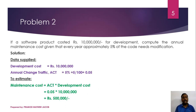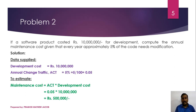The development cost is given as one crore. Annual Change Traffic ACT equals 5%, which is 5 divided by 100, equal to 0.05. Maintenance cost equals ACT into development cost, that is 0.05 into one crore, which equals five lakh.